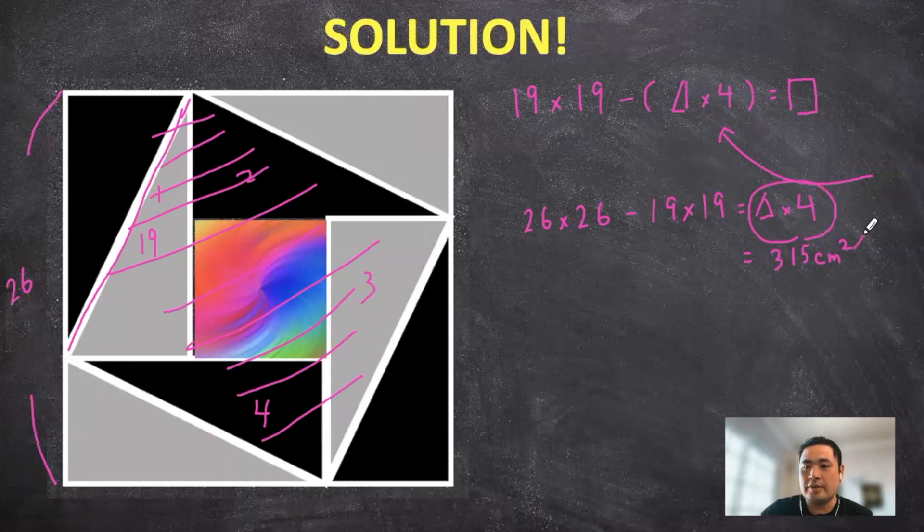Now we can use this information and substitute that back into our original equation. So if we do that, we have 19 times 19 minus 315. And if we do our multiplication and subtraction correctly,